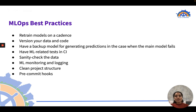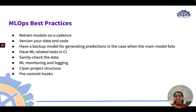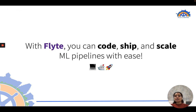Let's look at a couple of MLOps best practices: retrain models on a cadence to keep them updated; version your data and code; have a backup model for generating predictions when the main model fails; include ML-related tests in CI; sanity check your data quality; monitor your machine learning models; maintain a clean project structure by segregating model and data code; and use pre-commit hooks to ensure code quality. With Flight, you can code, ship, and scale ML pipelines with ease.